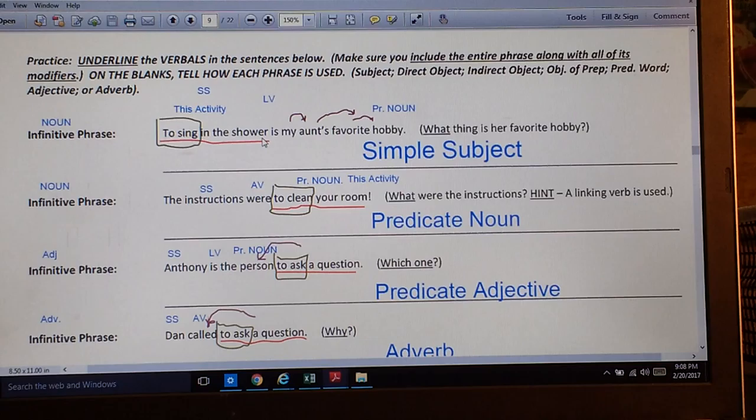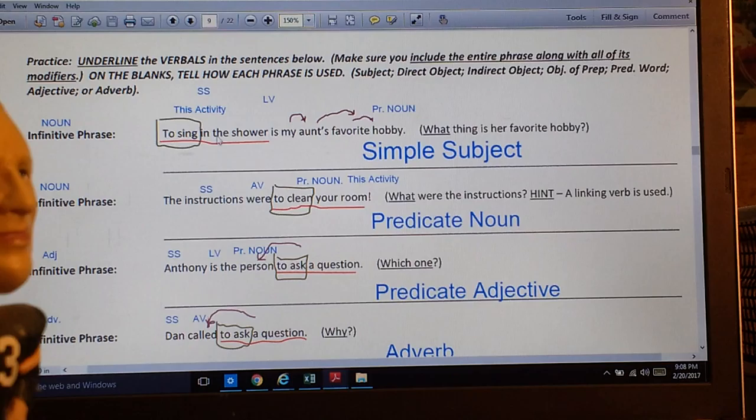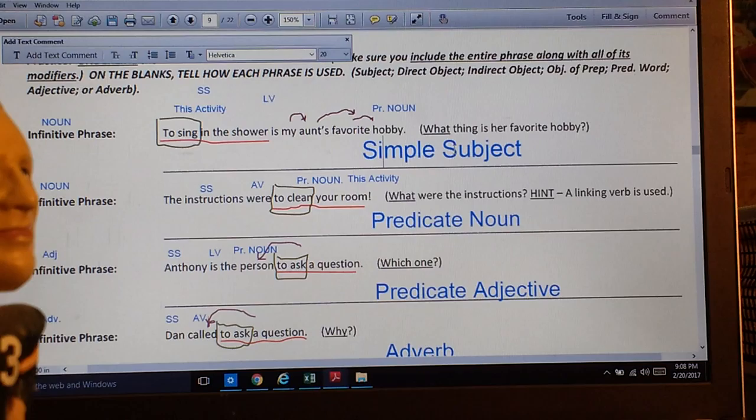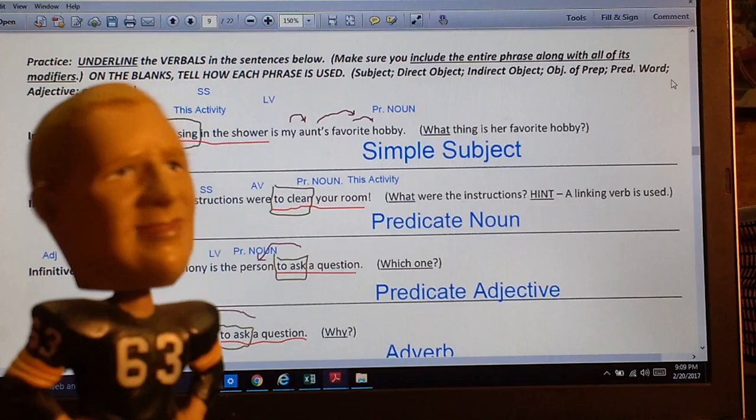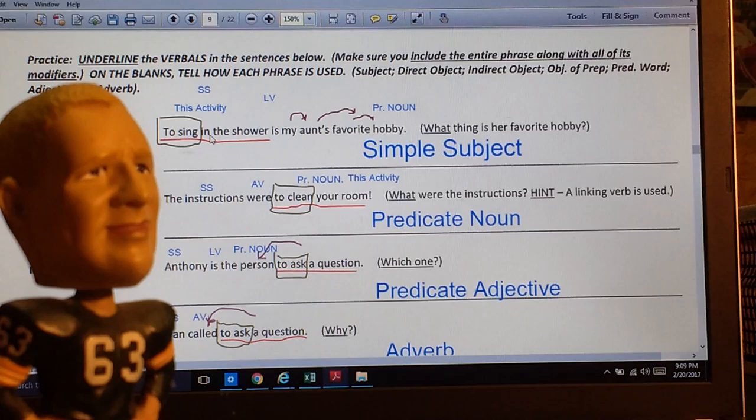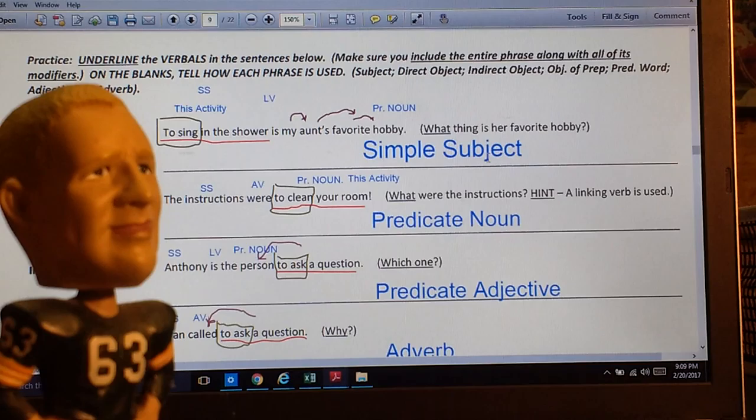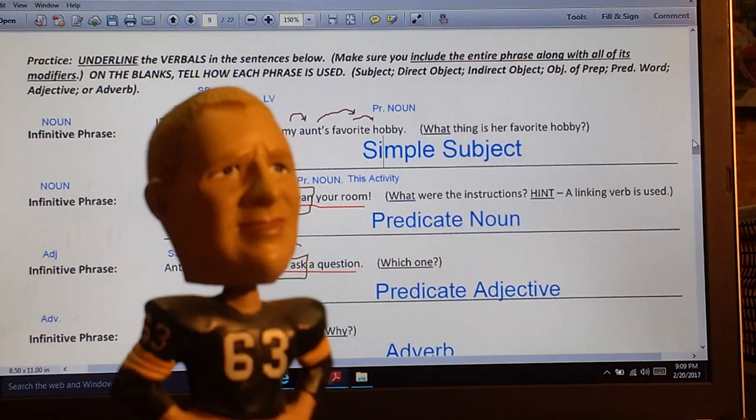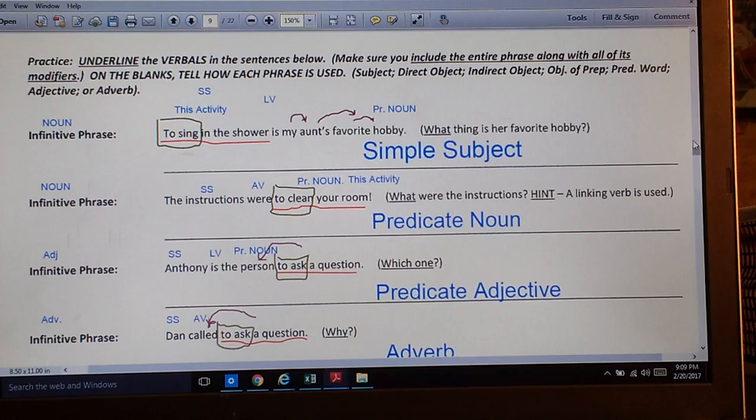So, the first one. To sing in the shower is my aunt's favorite hobby. I have to ask this question. What thing is her favorite hobby? And we should get this down. To sing. To sing in the shower. That thing. That activity. Is my aunt's favorite hobby. This group of words acts like a noun. And if it's acting like a noun, it could be a subject. And that's what we see here. So, our first answer would be simple subject. Simple subject. This infinitive phrase. To plus the verb. And any helpers with it. Like this prepositional phrase, which is helping it out. To sing in the shower is a simple subject of that sentence. That activity.